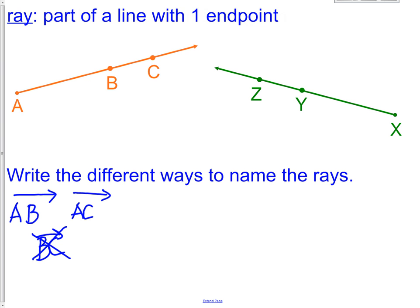The green ray, just like the orange ray, has three ways it could be named. It could be XZ. It could be XY.